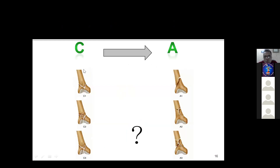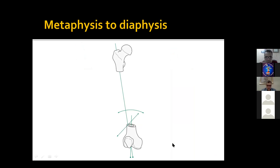Our aim when we treat the articular component is to downgrade the fracture — that is, to convert a type C fracture into a type A fracture. When we treat type C1 by fixing the articular elements, we convert it into a type A1 fracture: there is no articular injury now that we've fixed it, and we only have a simple metaphysial component. C2 can be converted into an A2 type fracture by fixing the articular component, and C3 into A3.